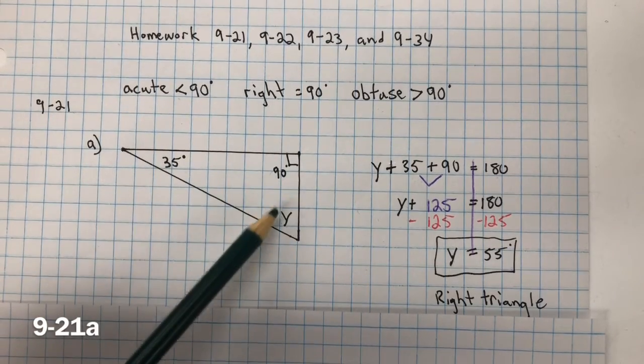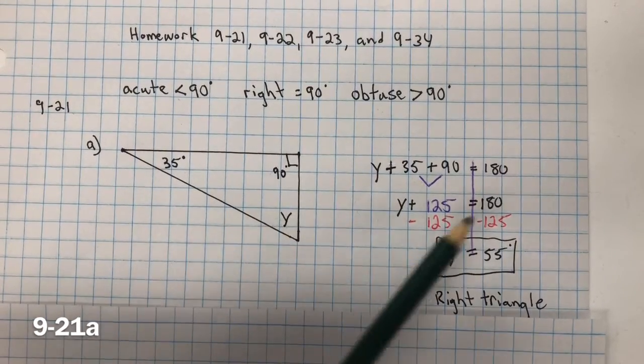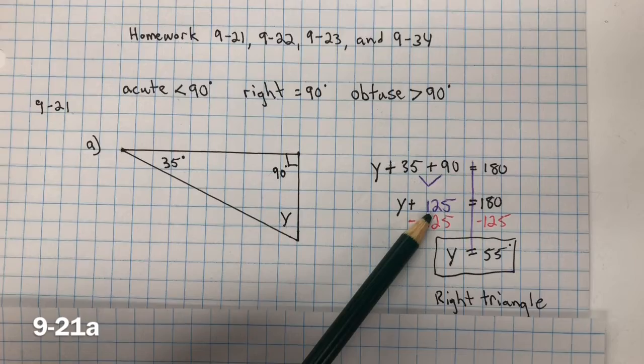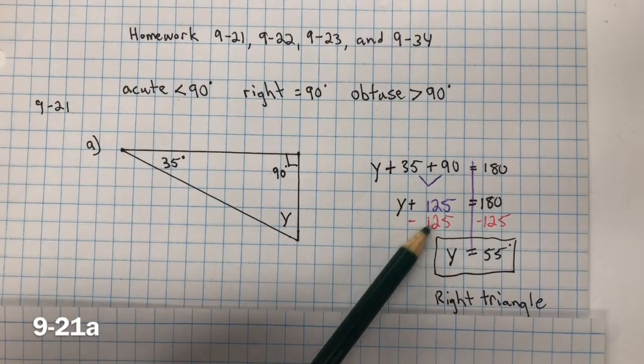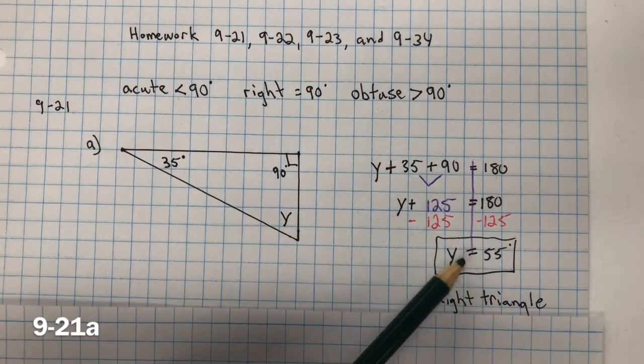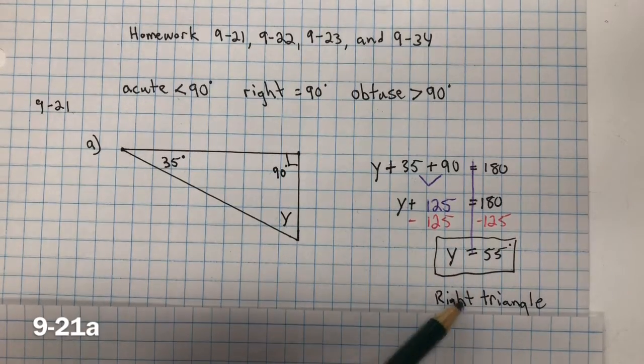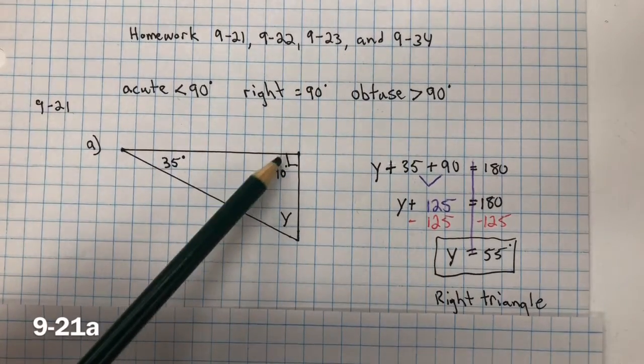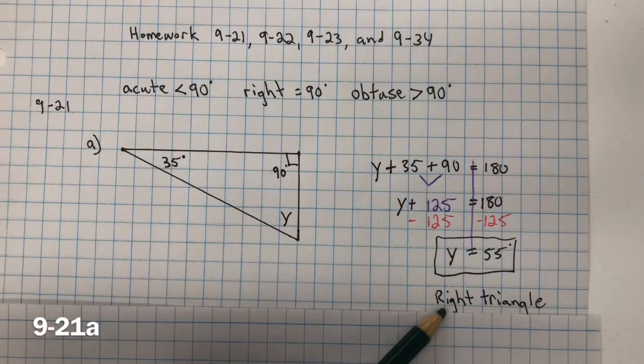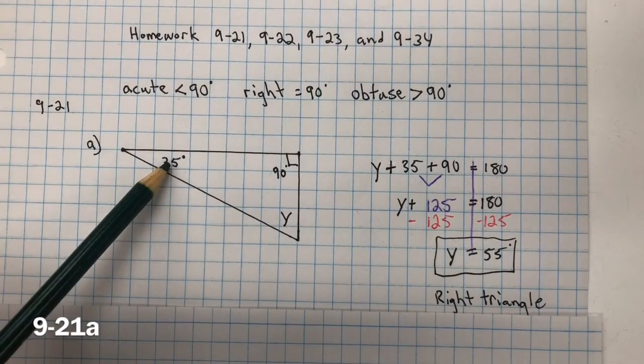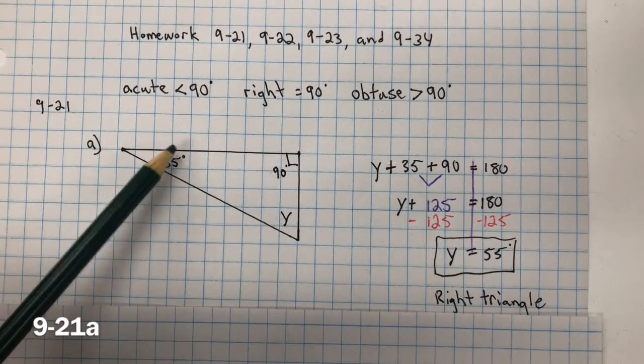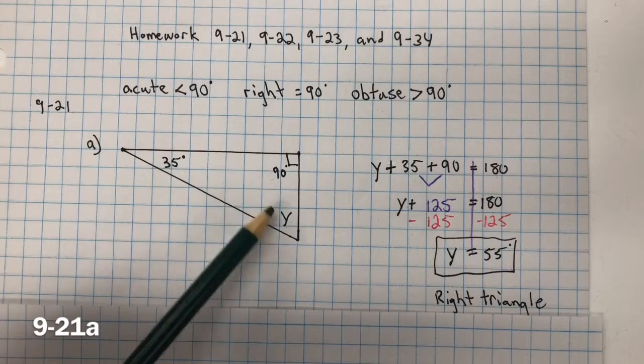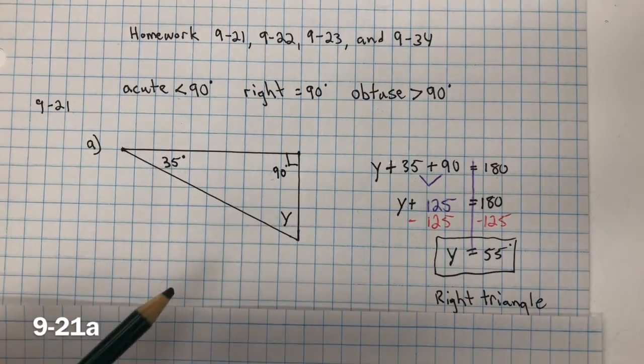So 35 plus 90 plus y will equal 180 degrees. Combine like terms, 35 plus 90 is 125. Inverse property of addition is subtraction, so we subtract 125 from both sides, and we get y equals 55. The greatest angle is 90 degrees, so it's a right triangle. Always check to make sure you did it correctly by taking the sum of the three measures. 35 plus 90 plus 55 does equal 180 degrees.